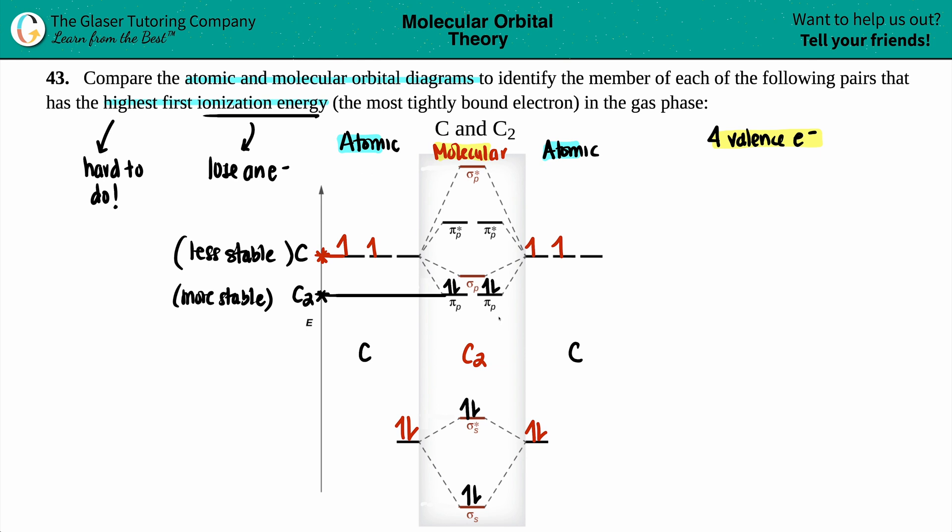So in this case, the one that has the highest first ionization energy is C2. And that is the final answer. Box it off. Let's make it pretty. And there you go.